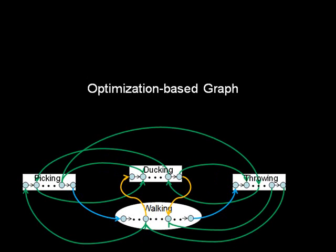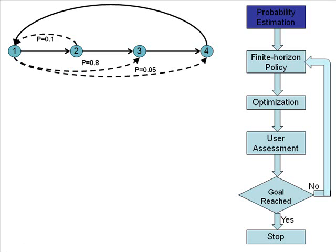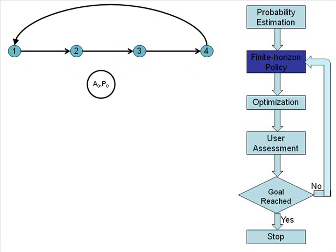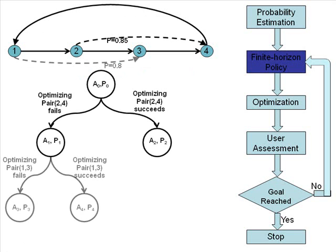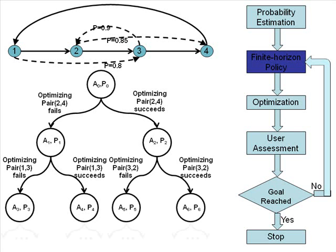Optimization allows us to add a vast number of complex, realistic-looking transitions to the graph. To construct an optimization-based graph, we first iterate through pairs of postures and assign the probability of transition to each pair. High probability means that continuous optimization is likely to produce a natural transition. Next, we perform a finite horizon policy computation to decide which pairs of postures and in which order they should be chosen for optimization, so as to achieve a good quality optimization-based graph with the least number of optimizations.